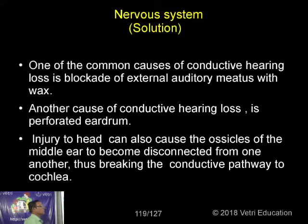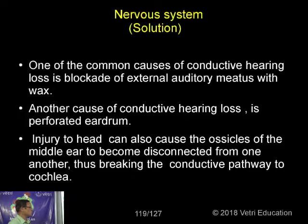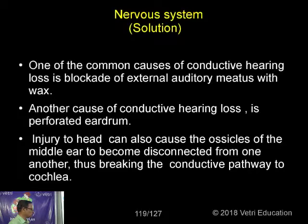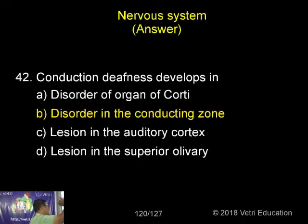One of the common causes of conductive hearing loss is blockade of the external auditory meatus with wax. Another cause is a perforated eardrum. Injury to the head can also cause the ossicles of the middle ear to become disconnected from one another, thus breaking the conducting pathway to the cochlea.